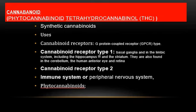CB2 receptors are predominantly found in the immune system and immune-derived cells. They are present in microglia and to some extent in the human cerebellum. They are primarily responsible for immune modulation.